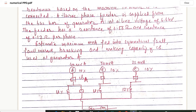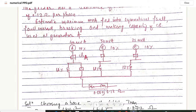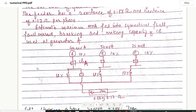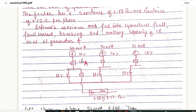The single line diagram shows three generators A, B, and C. Generator A has an MVA rating of 40 MVA with 10% reactance. Generator B is 50 MVA with 10% reactance. The feeder connected from generator A has a resistance of 0.06 ohm and reactance of 0.12 ohm. We need to determine the maximum MVA fed into the symmetrical fault, fault current, and breaking and making capacity of the circuit breaker at generator A.